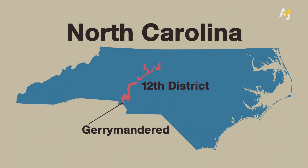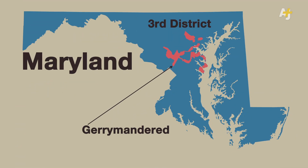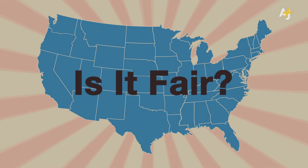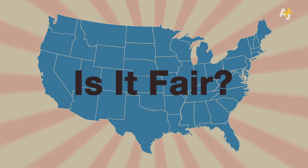Now here's what that really looks like. Yup, those are actual congressional districts. So is it fair to change geography in order to win?